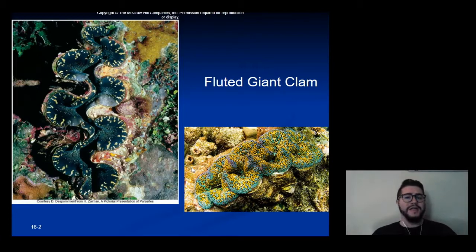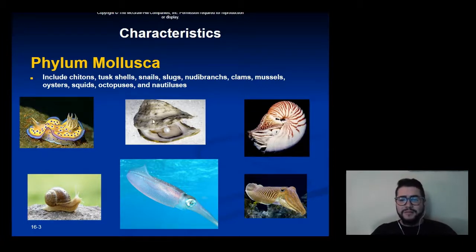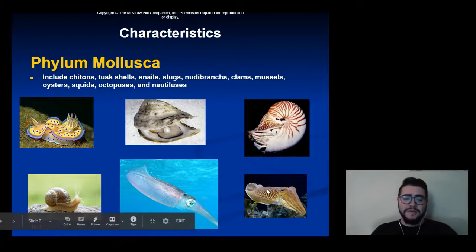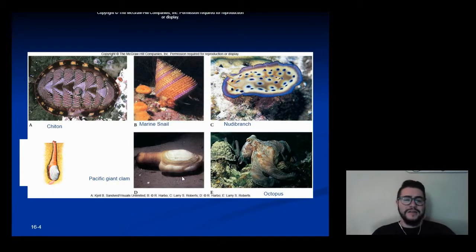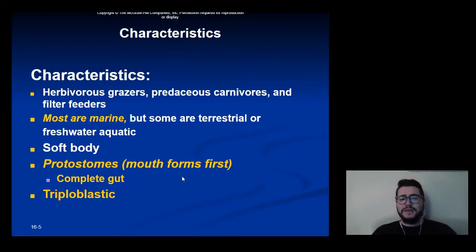This is a fluted giant clam. A couple other examples: this is a nudibranch over here, which is a sea slug. We have oysters, chamber nautilus, cuttlefish, squids, snails, chitins, and so on. So if you just look at all of these different animals, not many of them look that closely related, but they do share all of these common characteristics.